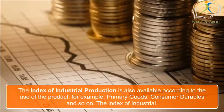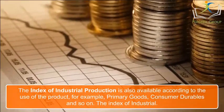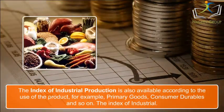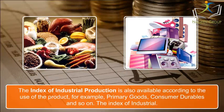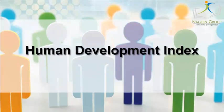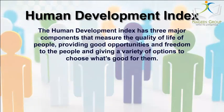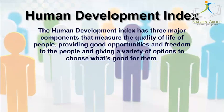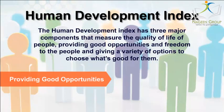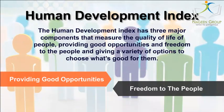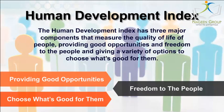The Index of Industrial Production is also available according to the use of the product — for example, primary goods, consumer durables, and so on. The Human Development Index has three major components that measure the quality of life of people: providing good opportunities and freedom to the people, and giving a variety of options to choose what's good for them.